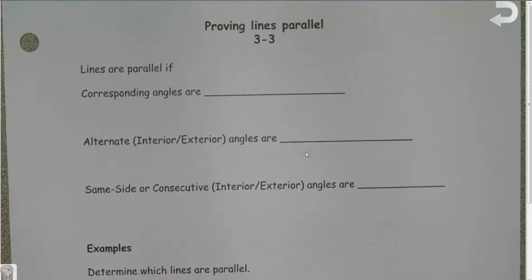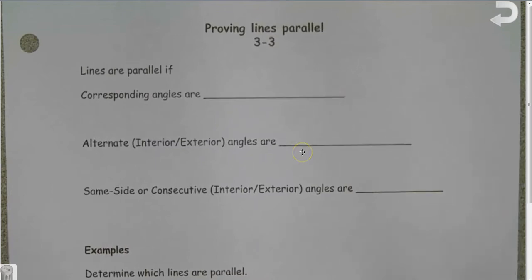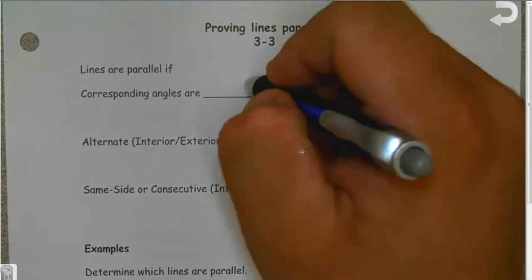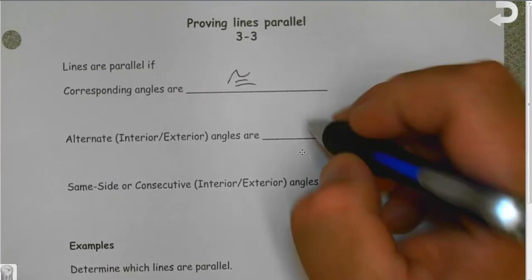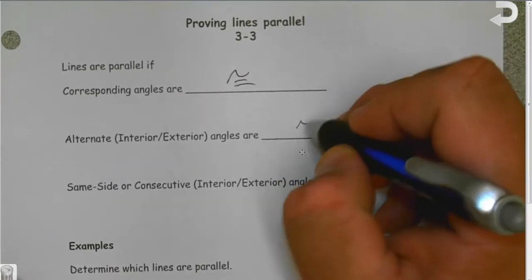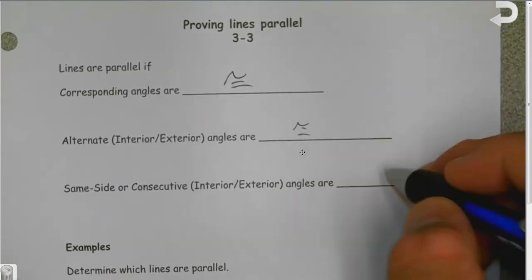All right, so in the first half of today's notes we spent time proving how numbers can make lines parallel. Now we're going to go backwards. Lines are parallel if corresponding angles are congruent, if alternating interior angles are congruent, and if same side angles are supplementary.